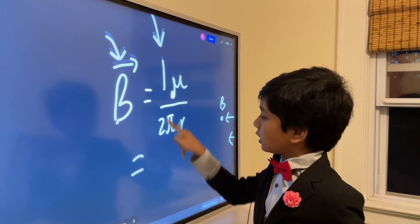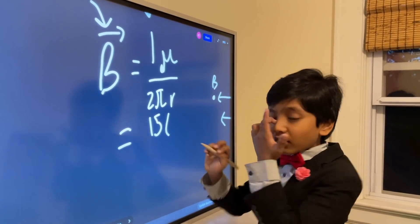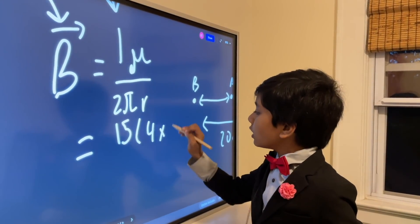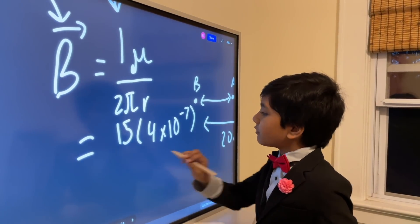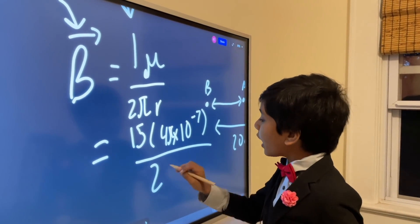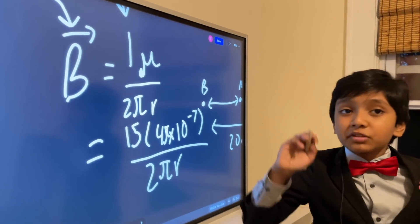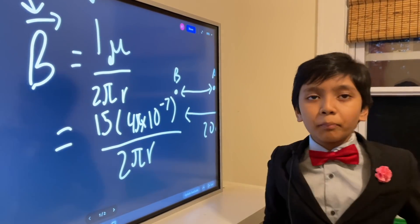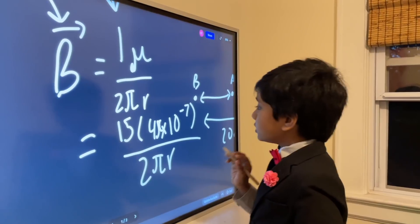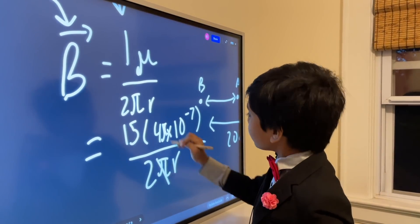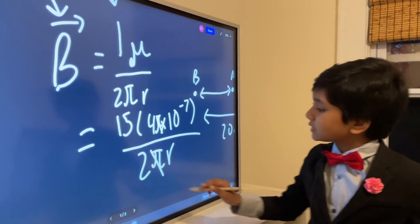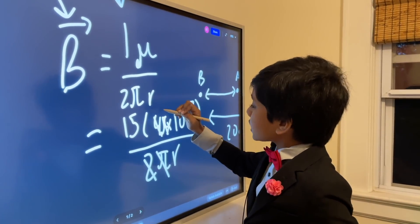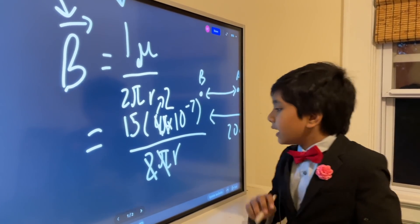So it's going to be 15. Mu is a universal constant, no need to worry. So 15 times 4 times 10 to the negative 7 for pi, and then 2 pi r. So now, let's cancel out the things that we do not want. Remember, this is for point A, not point B. So the thing that we do not want is pi. Now let's cancel out, 2 goes into 4, 2 times.